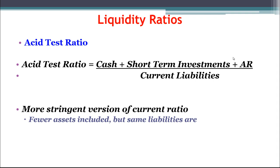The other big current asset we leave out would be prepaid expenses, like prepaid rent and prepaid insurance. The thought is that once you've paid for them, you're probably not going to be able to get a refund and use that cash for something else — that prepaid rent is just going to be used in the next few months. So we carve that out as well. It's a more stringent version of the current ratio: fewer assets are included, but we're still calculating the same liabilities.